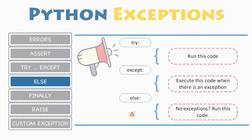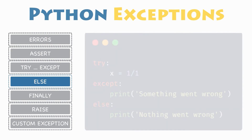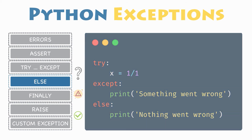Please note that exceptions in the else clause are not handled by the preceding except clauses. Here is an example that will divide the integer one by one and store its result in the variable x. If an error occurs during this process, an exception is raised and the except clause will catch and handle this error, printing out "something went wrong." Else it will print out "nothing went wrong" because the program did not run into any exceptions and the else clause was executed.